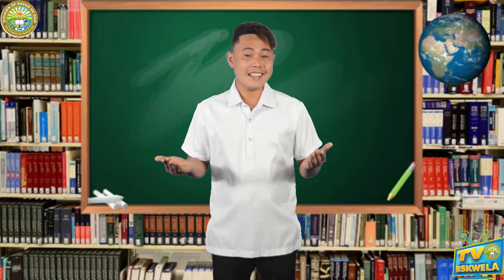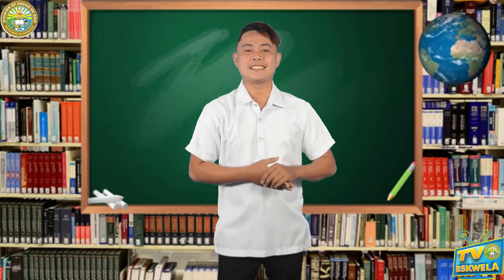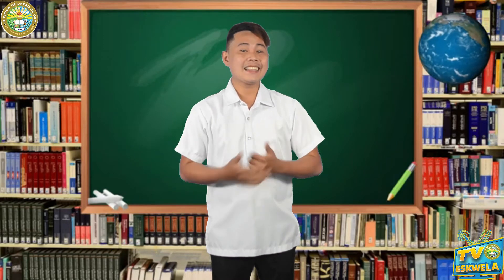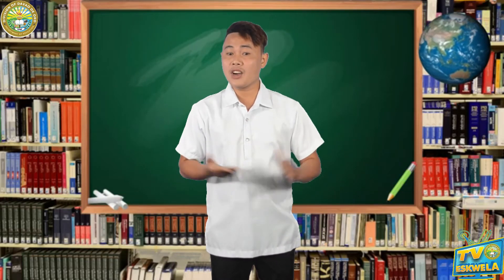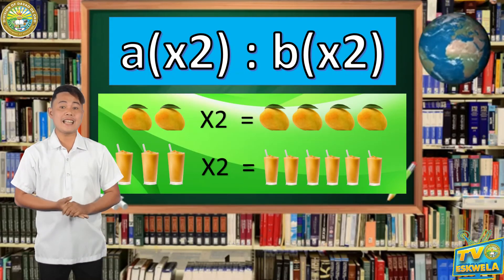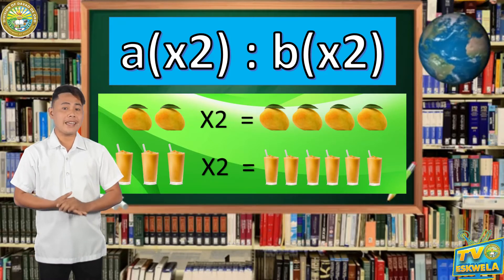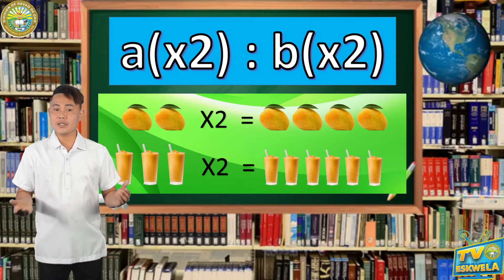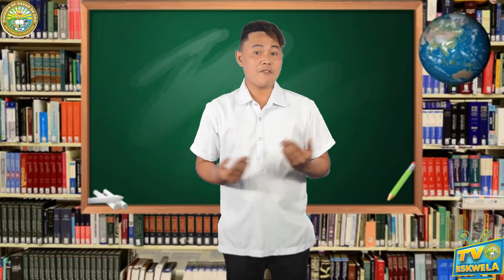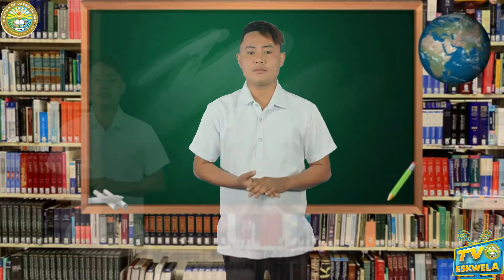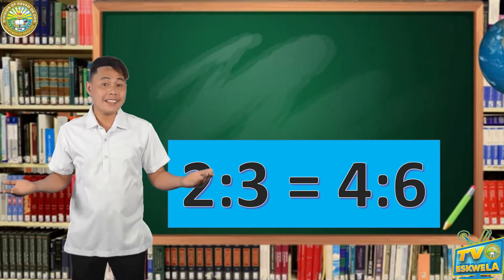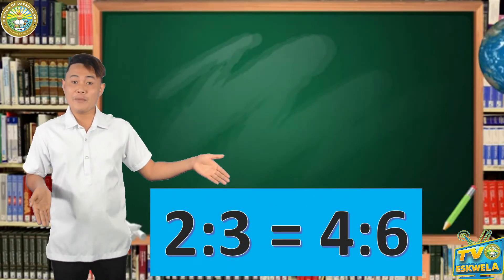What can you say about the ratios? The ratios are the same. When the first quantity doubles, the second quantity doubles also. The first quantity is the number of mangoes. Therefore, if you multiply it by 2, you can multiply also the second quantity, which is the number of glasses, by 2. You may do this whether in fraction form or in ratio form. And so, 2 is to 3 and 4 is to 6 are equivalent ratios. These 2 ratios form a proportion.